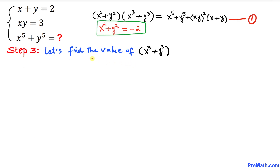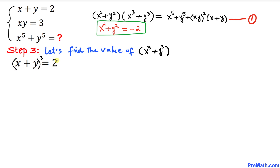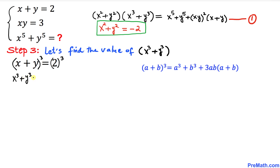Now let's find x cube plus y cube. Starting again from x plus y equals 2, we take the cube of both sides and expand using the formula (a+b)³ = a³ + b³ + 3xy(x+y). The left side becomes x power 3 plus y power 3 plus 3 times x times y times (x plus y), and the right side is 2 cubed equals 8.